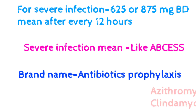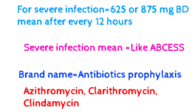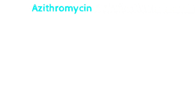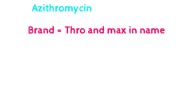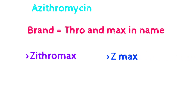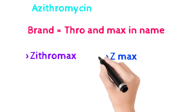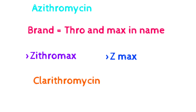Now for antibiotics used in prophylaxis: azithromycin, clarithromycin, and clindamycin. For azithromycin, the brand names always contain 'thro' or 'max', like Zithromax and Zedmax — these are the main brand names of azithromycin.